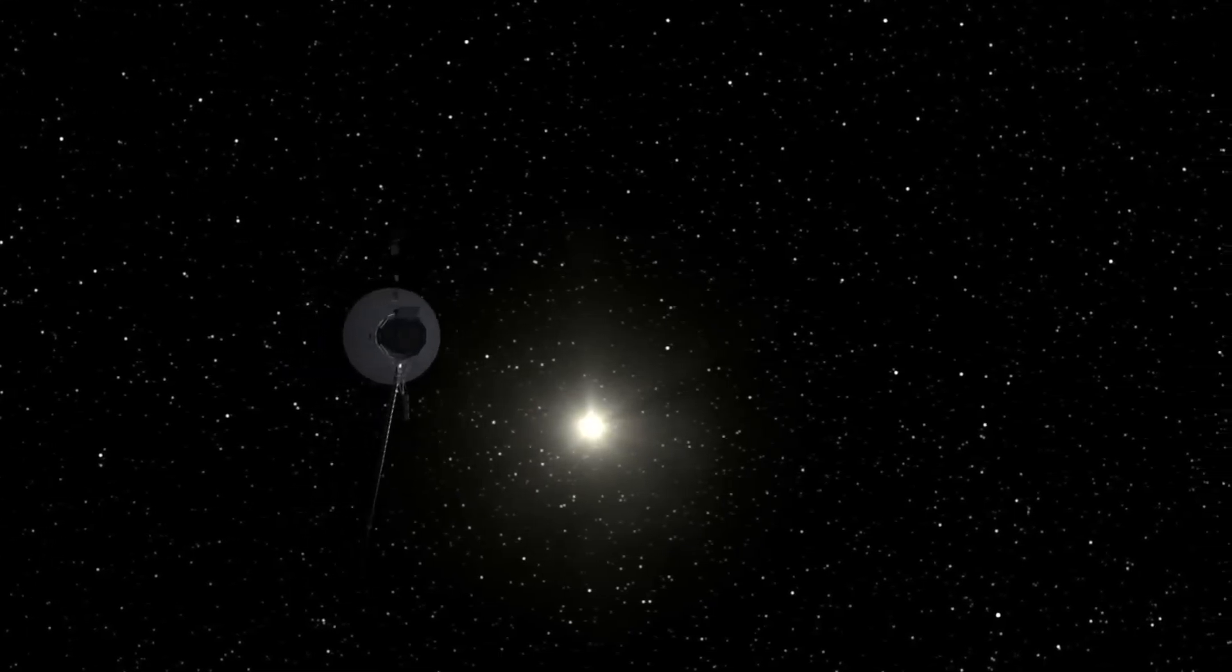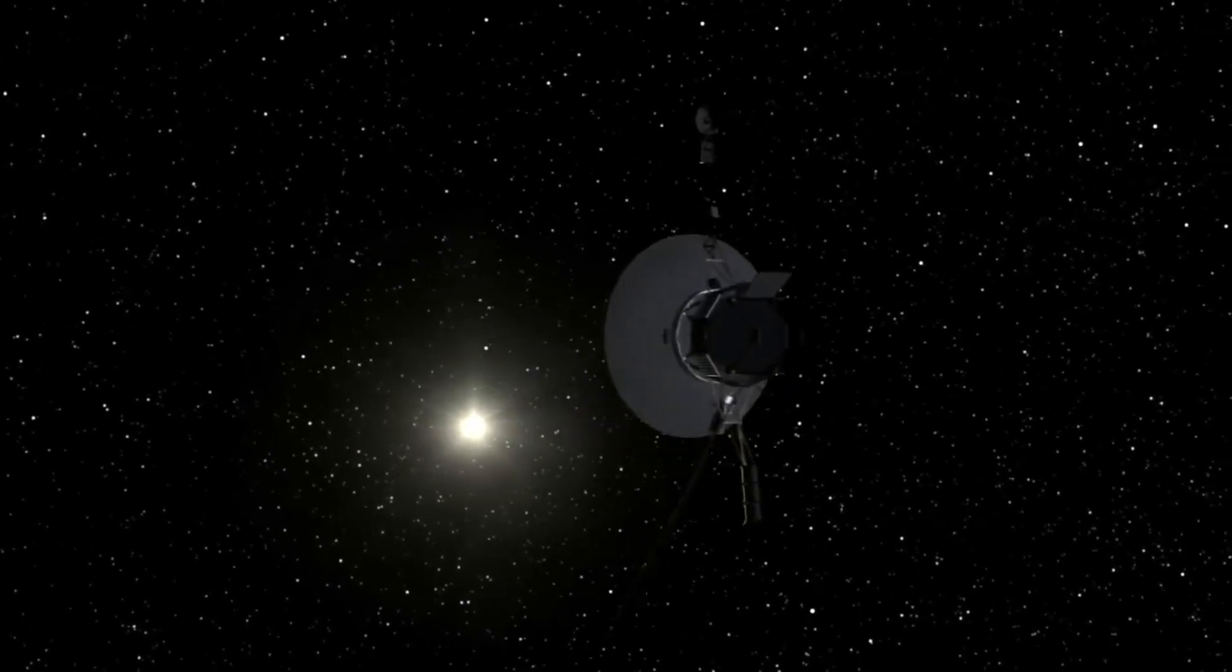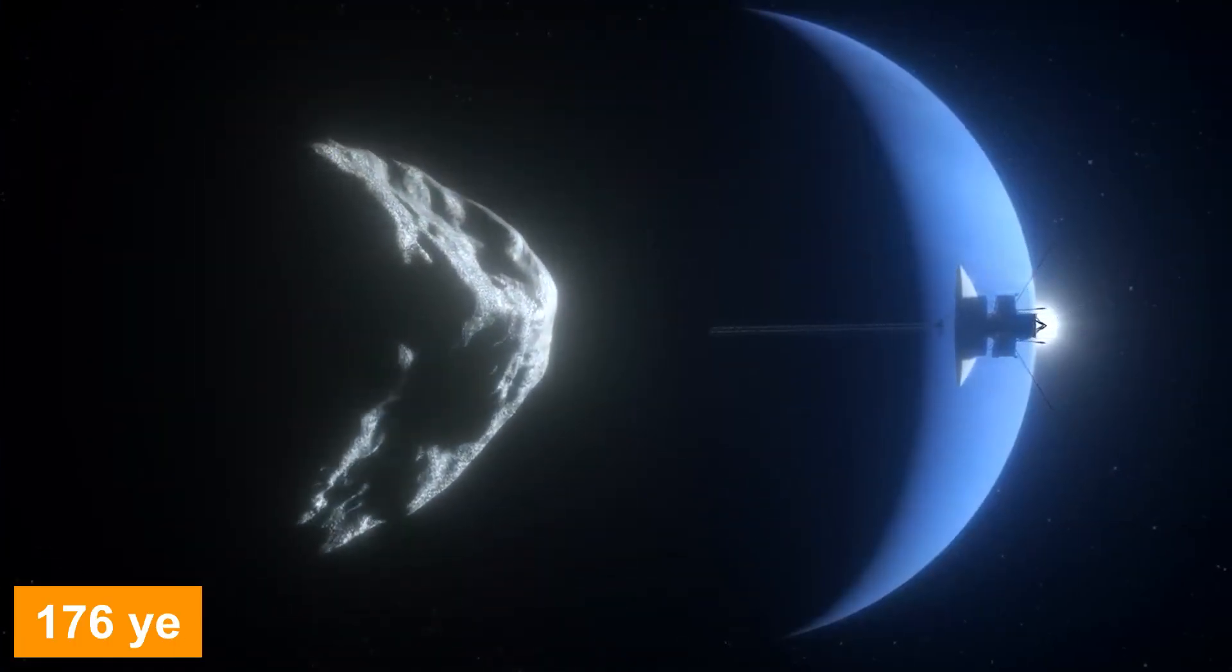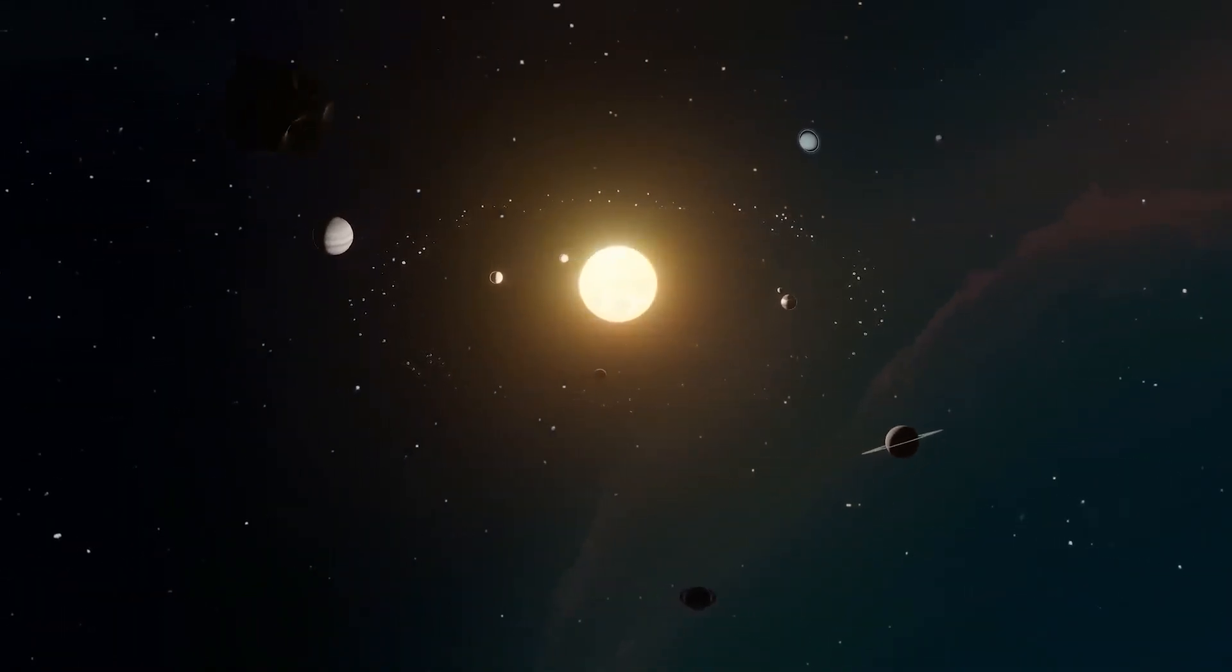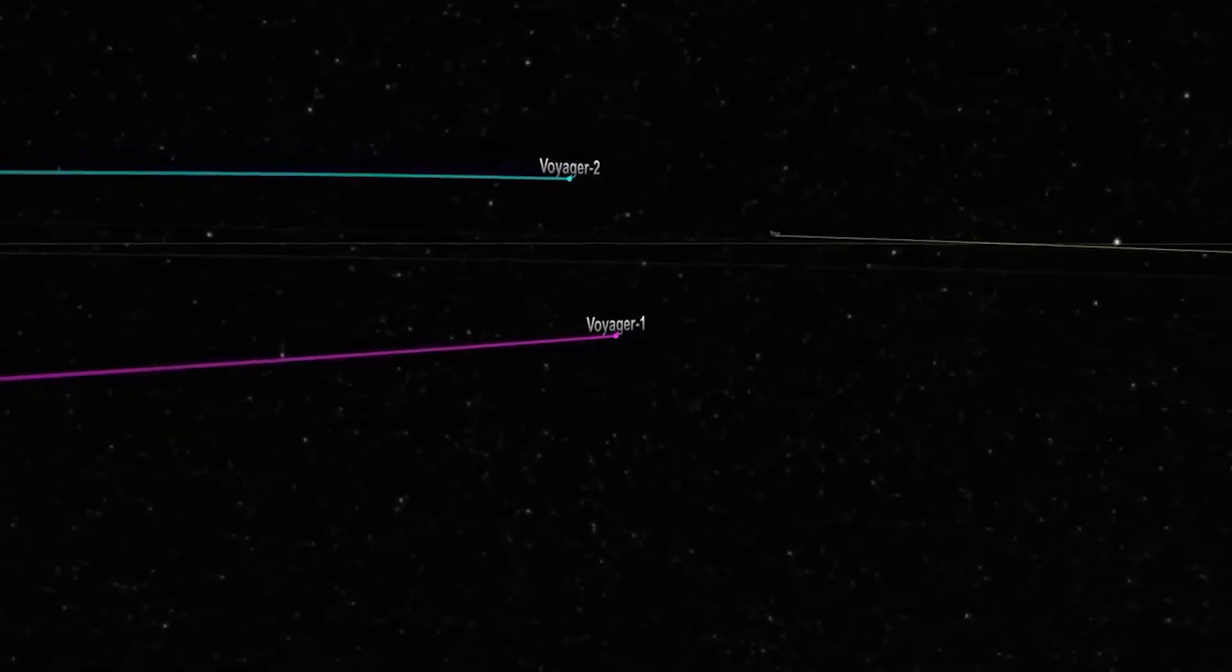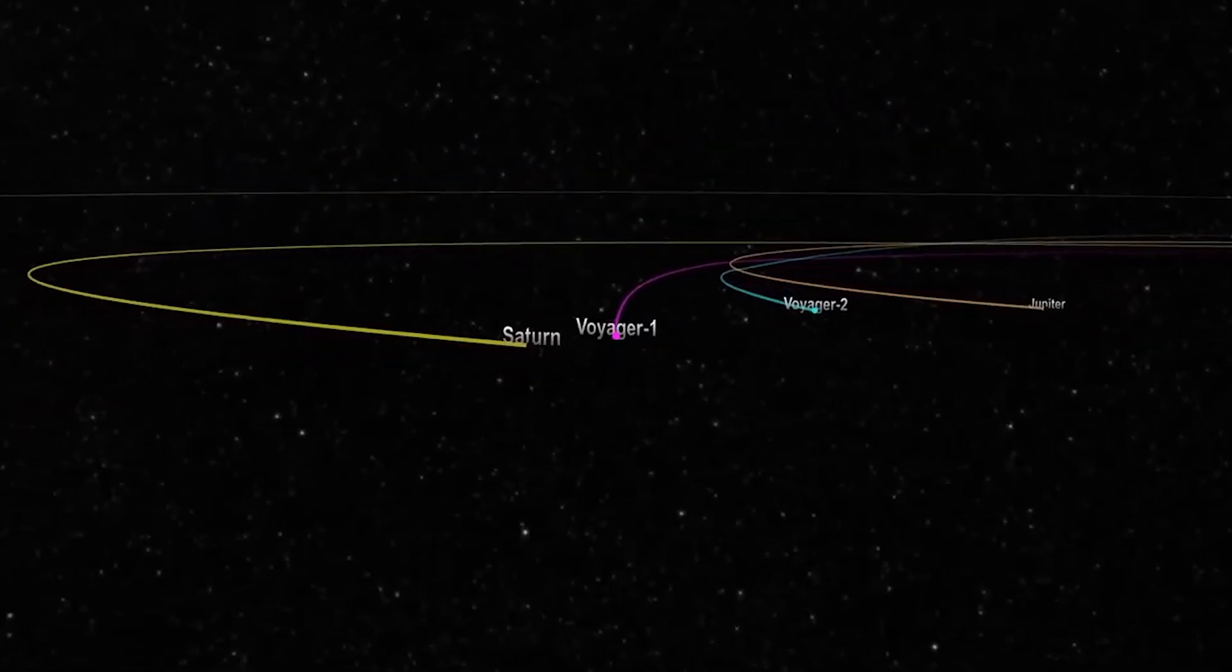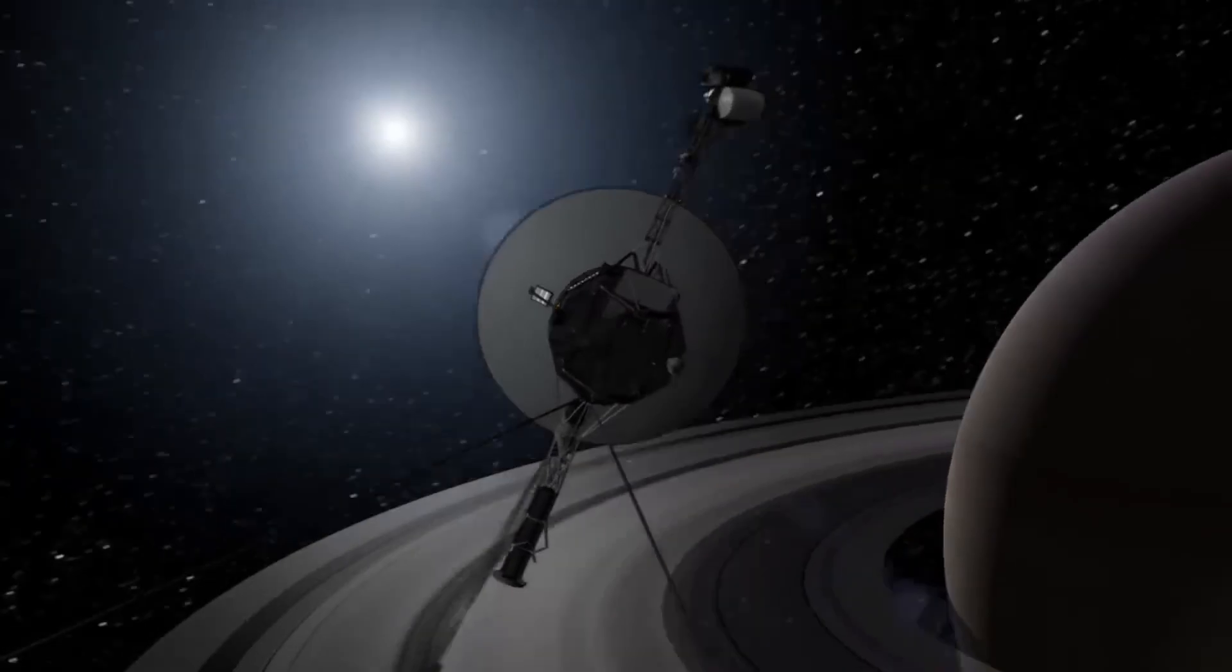The extraordinary voyage of Voyager 1 was made possible by a fortuitous alignment of the outer planets, an event occurring only once every 176 years. This celestial alignment allowed both Voyager 1 and Voyager 2 to maximize the energy generated by their three radioisotope thermoelectric generators while navigating their way from one planet to the next.